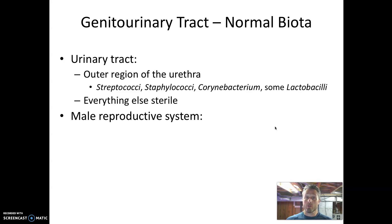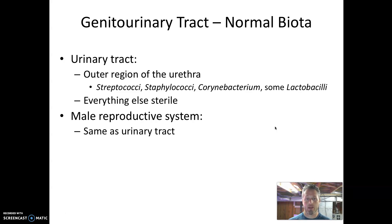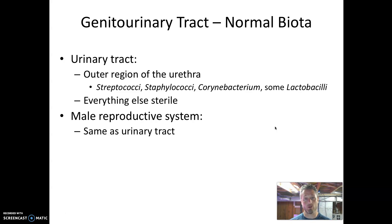In the male reproductive system, because it overlaps with the urinary system, the microbial population is exactly the same: some skin microbes in the outermost region of the urethra, but the vas deferens and the testes should be completely sterile.